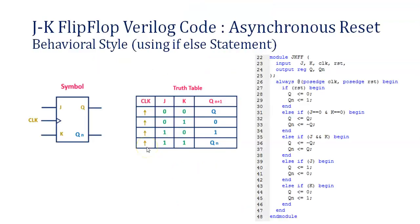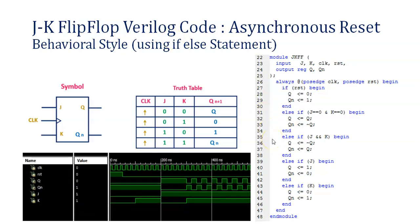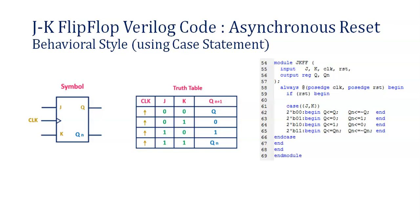Moving ahead with today's topic. In the previous session, we discussed what is the JK Flip-Flop, what is the truth table of JK Flip-Flop, and we have seen the code written in behavioral modeling style using if-else statements, along with the simulation. In this session, we will go ahead with the code written using case statement. You are able to see the JK Flip-Flop symbol and truth table.